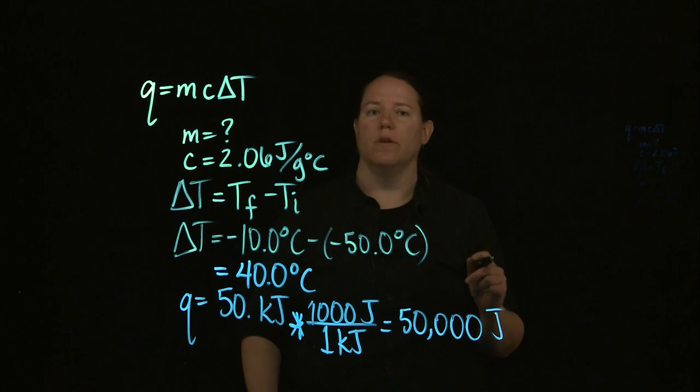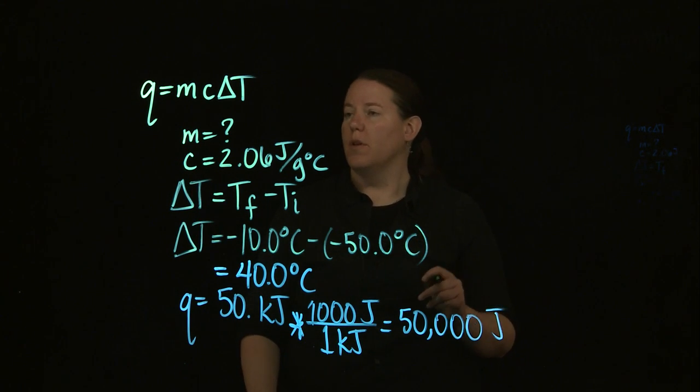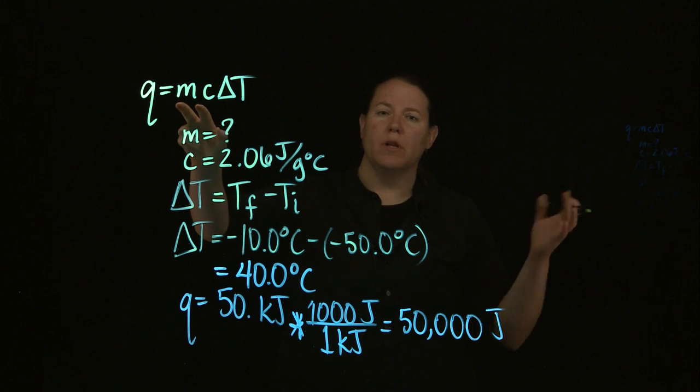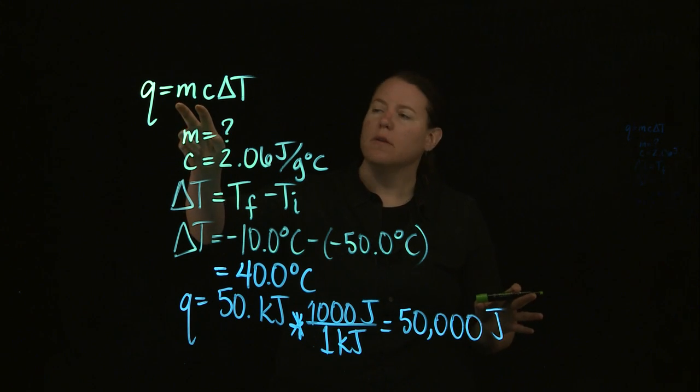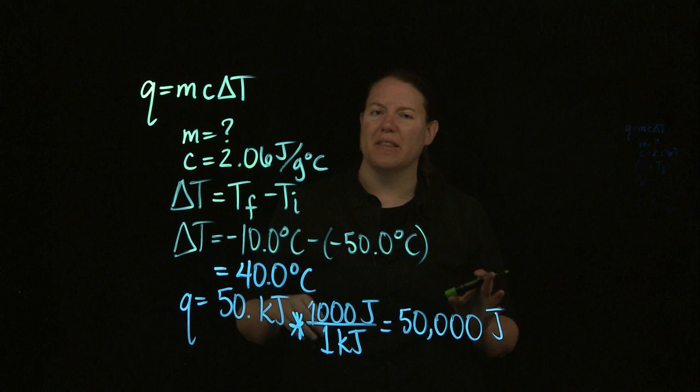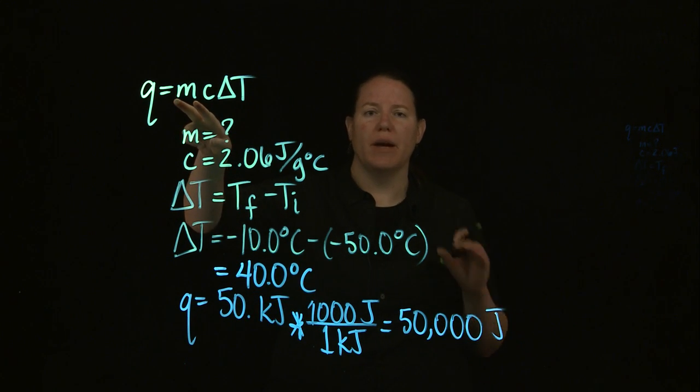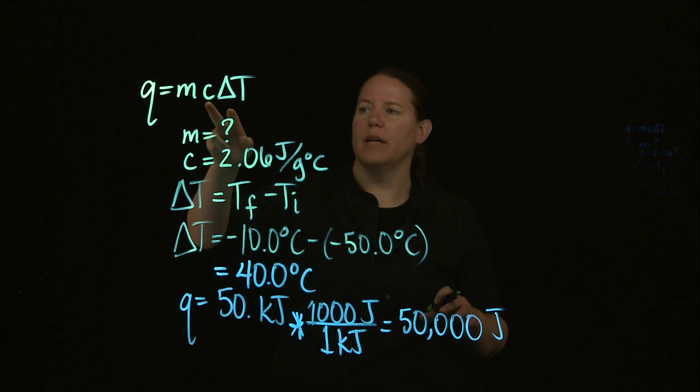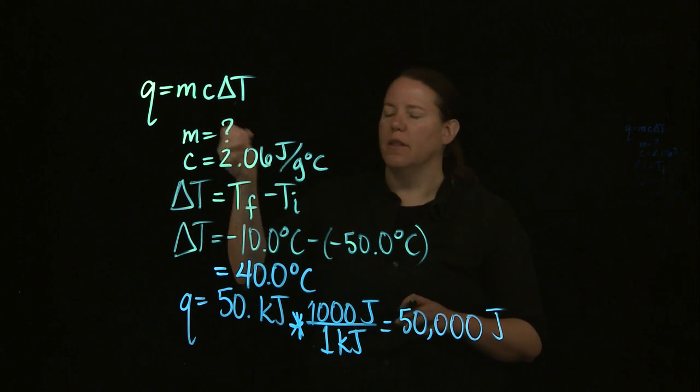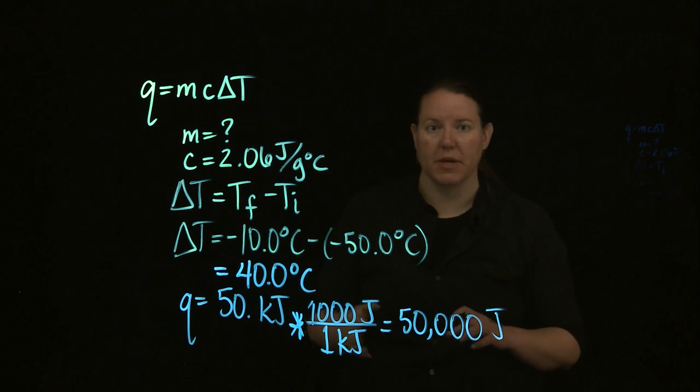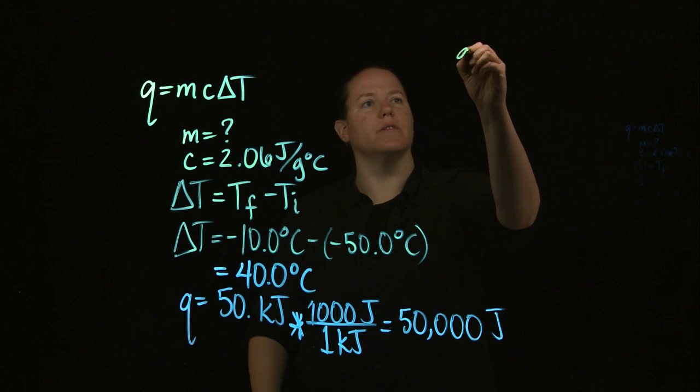So let's solve this for mass here. When you want to solve for mass, remember you need to put it in the numerator first if you can. It's already in the numerator, that's why I like this version of the equation. So all I need to do is get mass alone on one side, which means that I need to get rid of C and delta T. That means I'm dividing both sides by C and delta T in order to get rid of that.